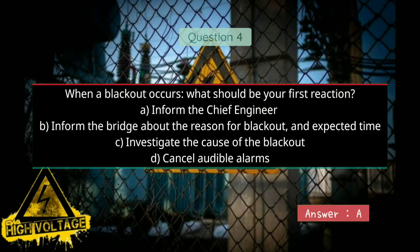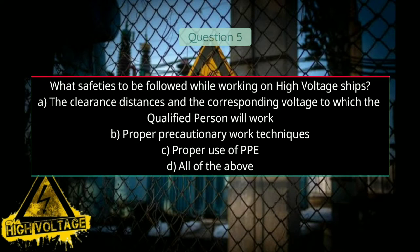Question number five: What safety measures are to be followed while working on high voltage? Option A: the clearance distances and the corresponding voltage to which the qualified person will work, Option B: proper precautionary work techniques, Option C: proper use of PPE, and Option D: all of the above. Correct answer will be D, all of the above.